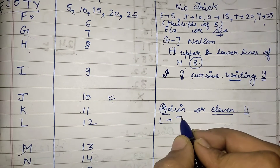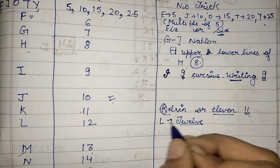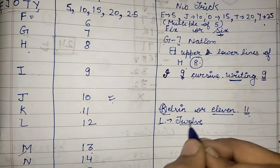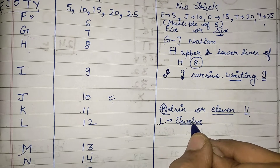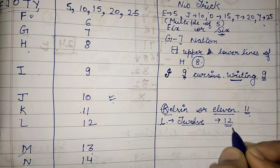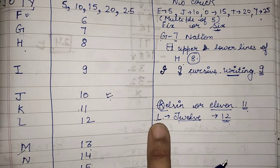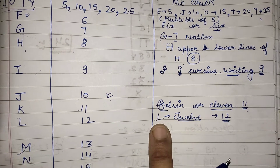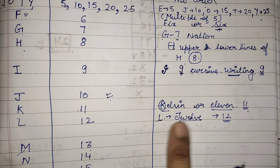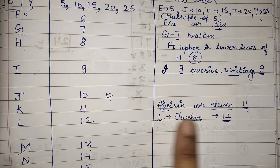Next, L is somewhat similar in sound to 'twelve'. When you say 'twelve' or 'L', at the last you get the sound of 'L'. So you can remember that L and twelve are connected, meaning L is present at the twelfth position.